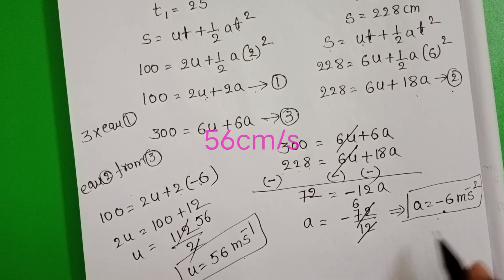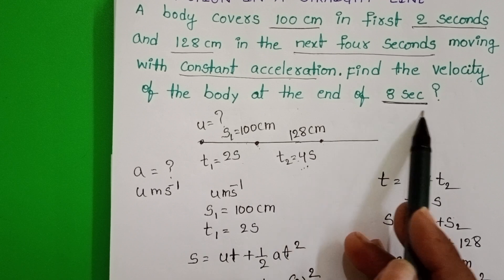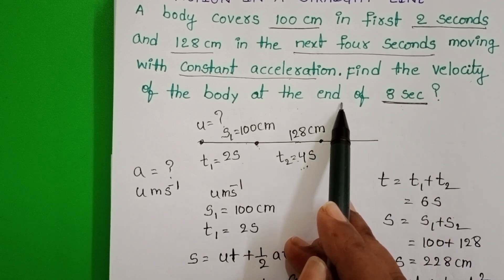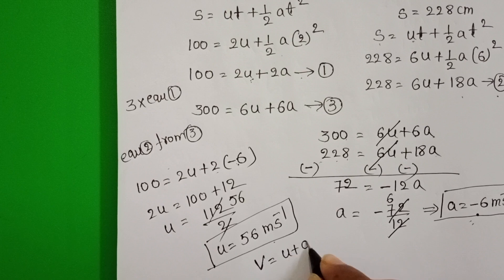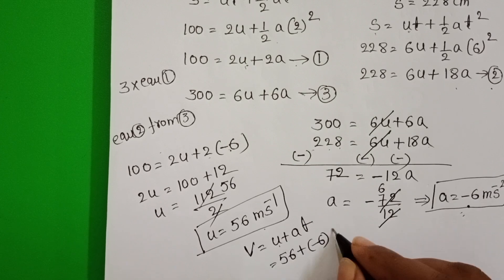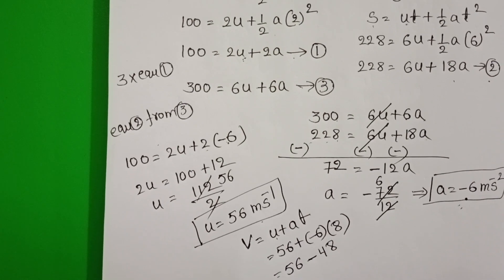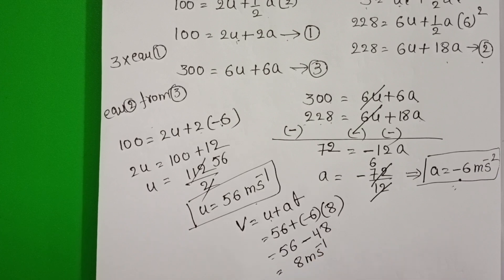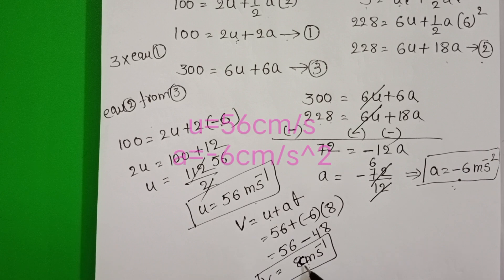We now know the initial velocity and the acceleration. We have to find the velocity of the body at the end of 8 seconds. Using the equation of motion V = U + AT: V = 56 + (−6) × 8 = 56 − 48 = 8 cm/s. So after 8 seconds, the velocity of the body is 8 cm/s.